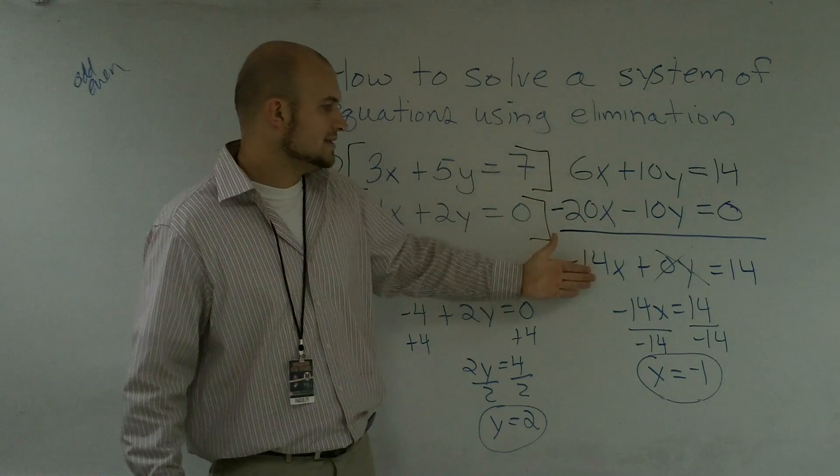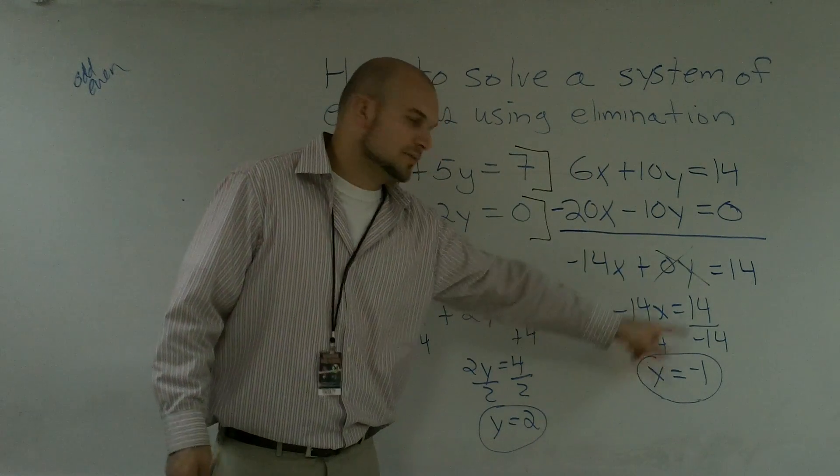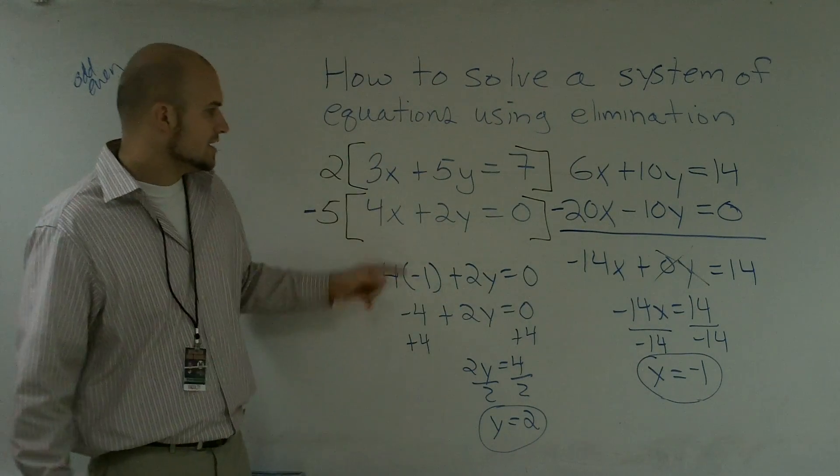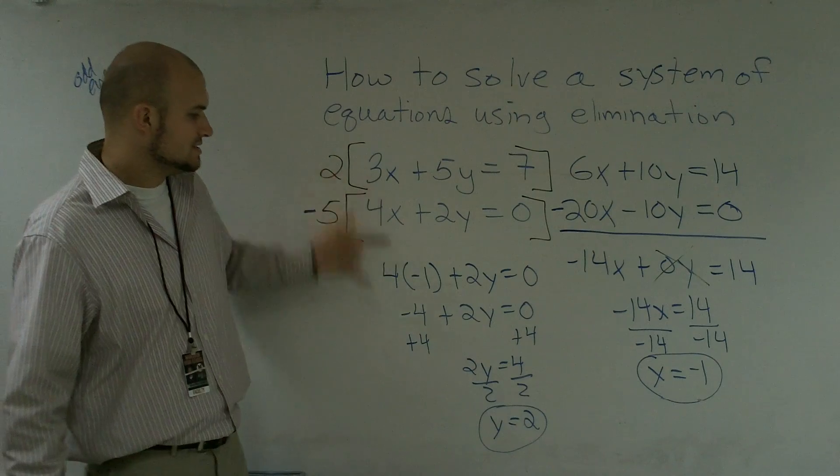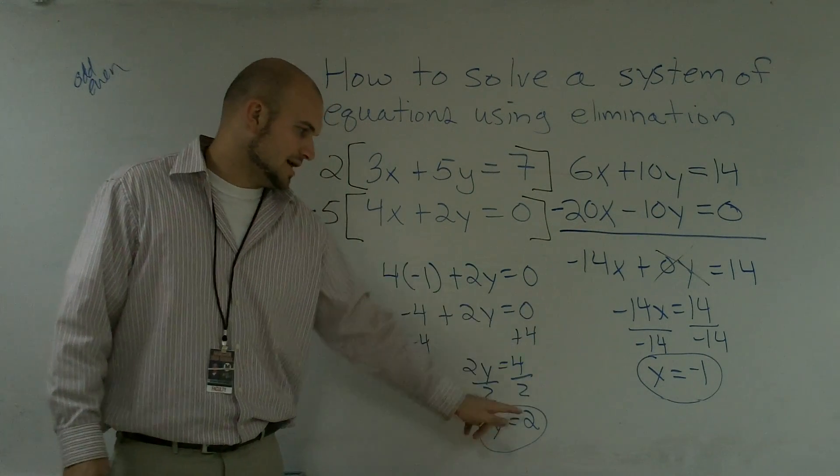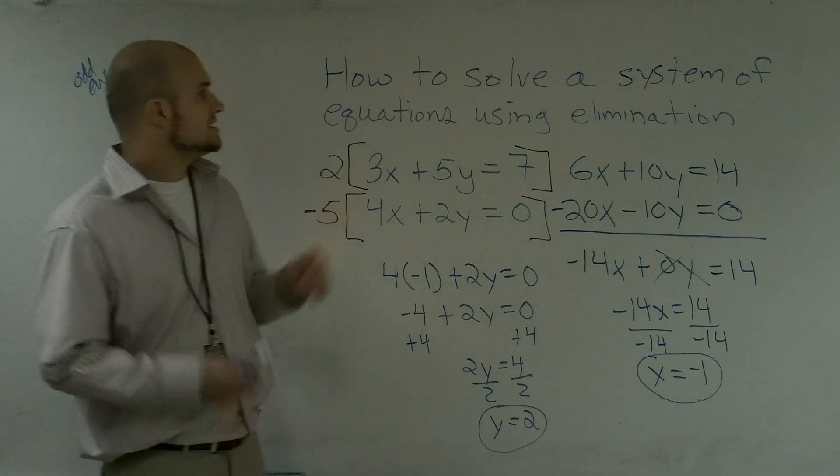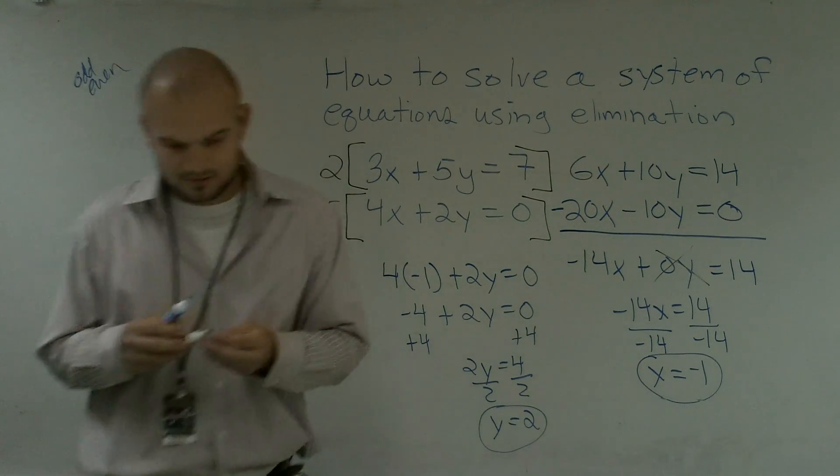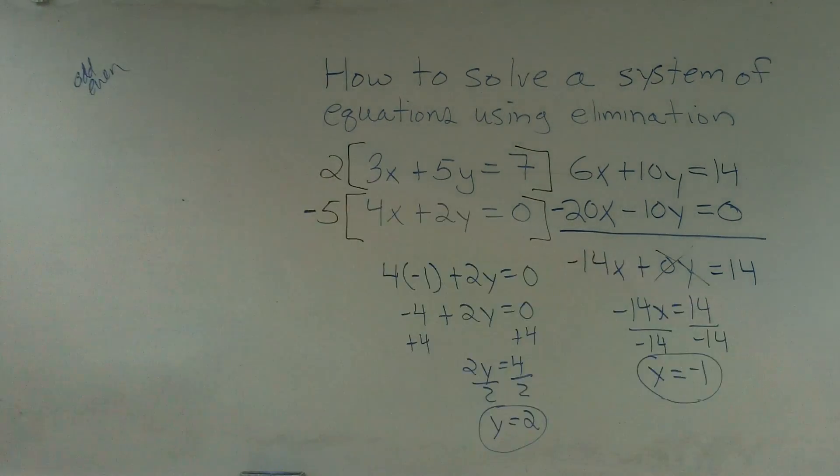So then you take your two new equations, you add them up, you solve for your one last variable. Then you take your variable, you plug it back into one of the original equations, and you solve for your new variable. And then that would be your final answer. So y equals 2 and x equals negative 1. That's how you solve a system of equations using elimination.